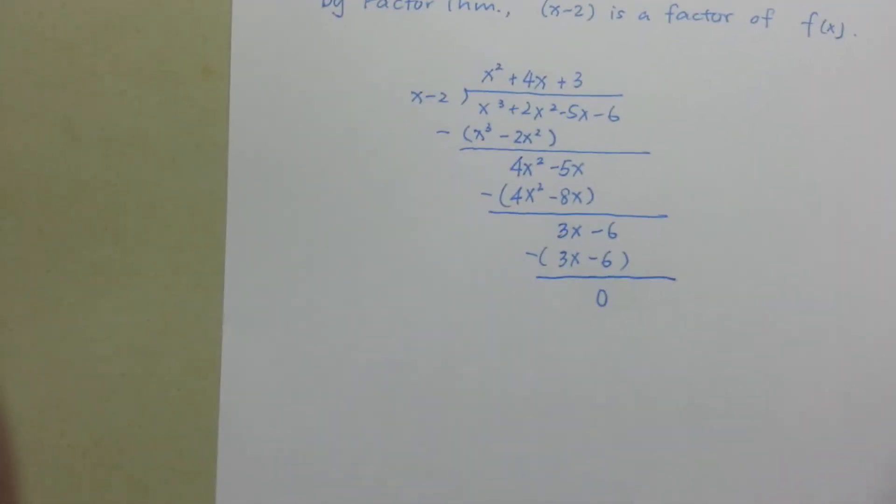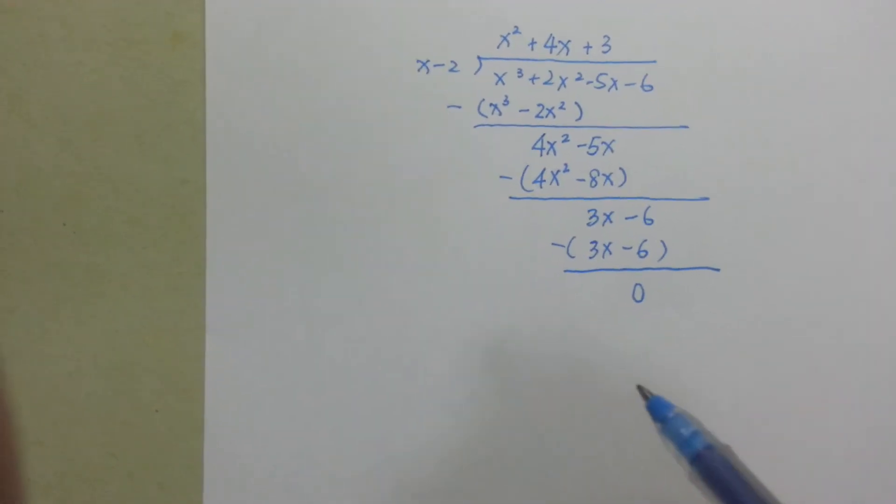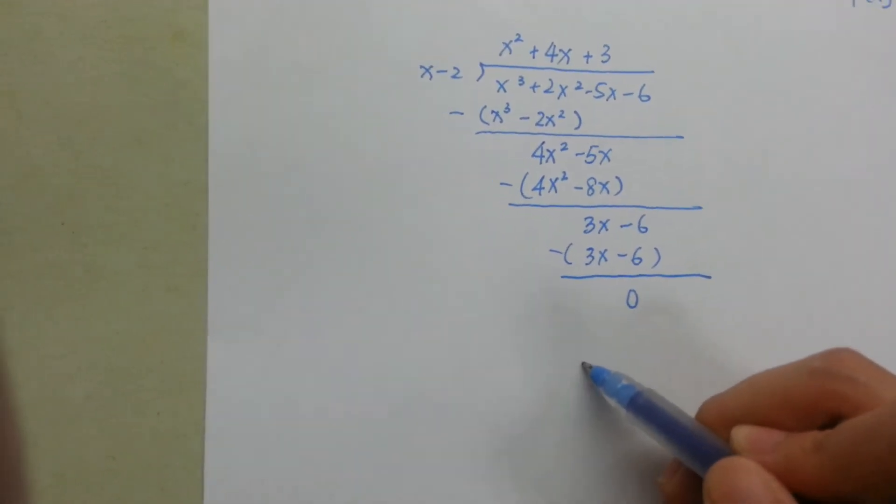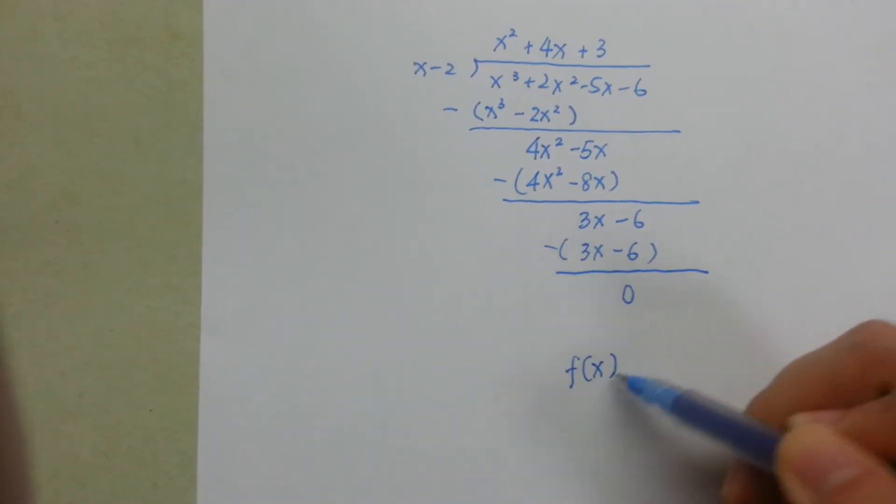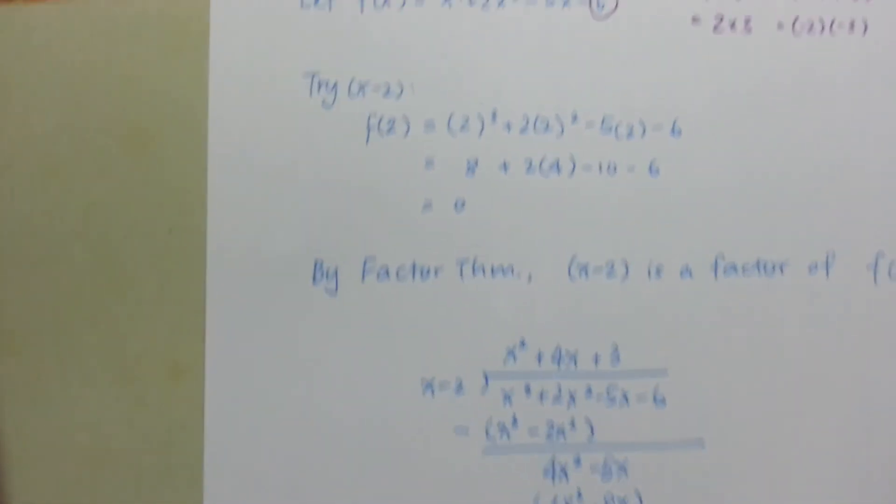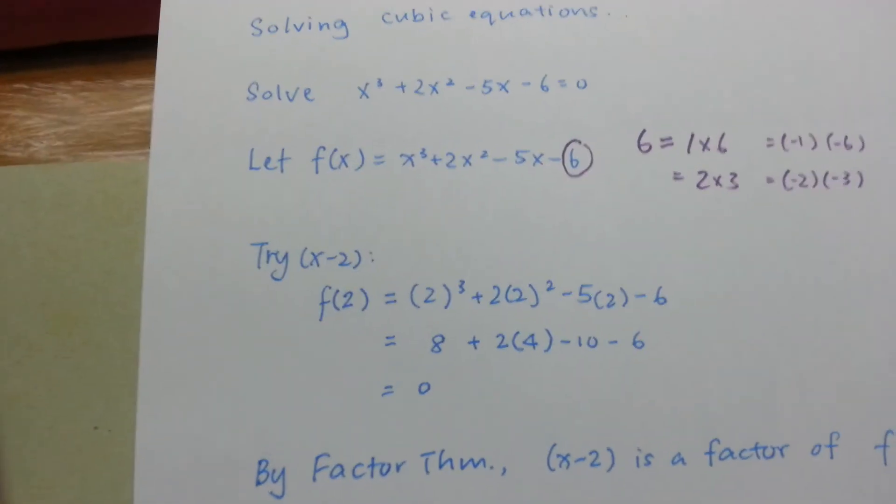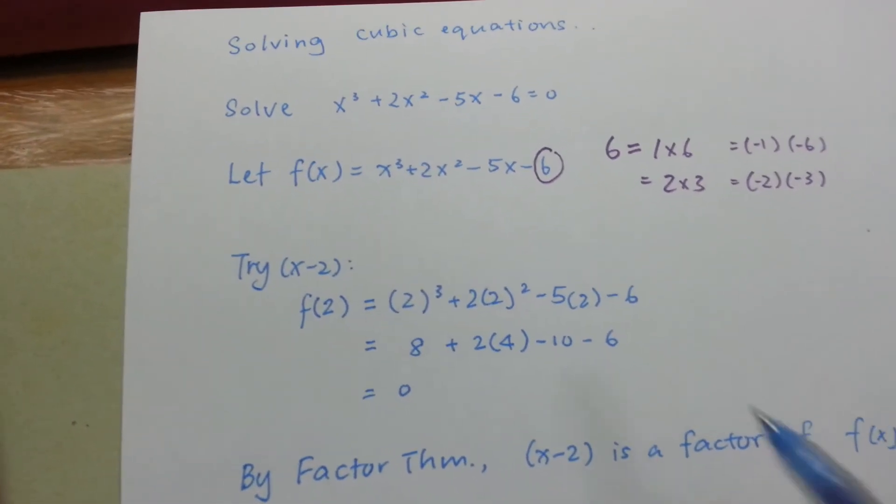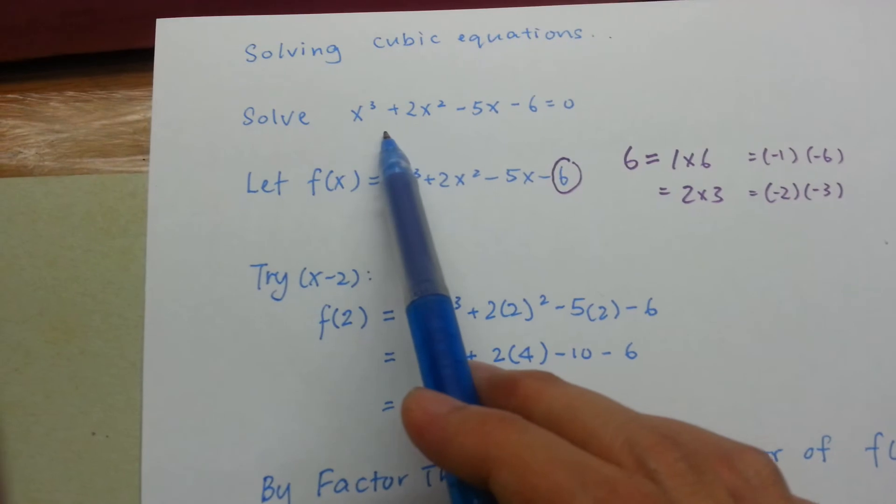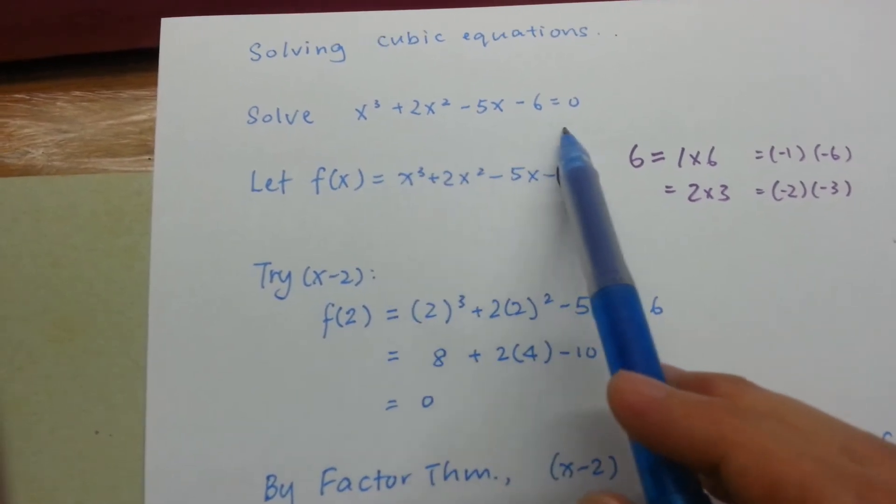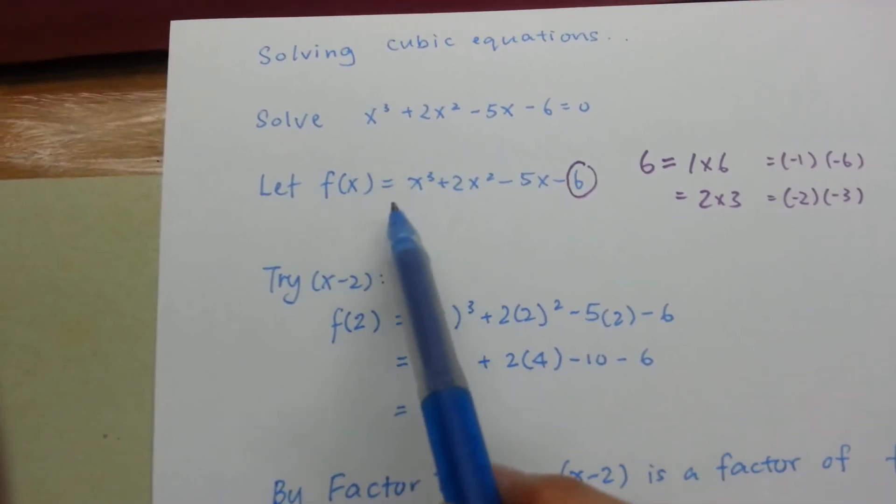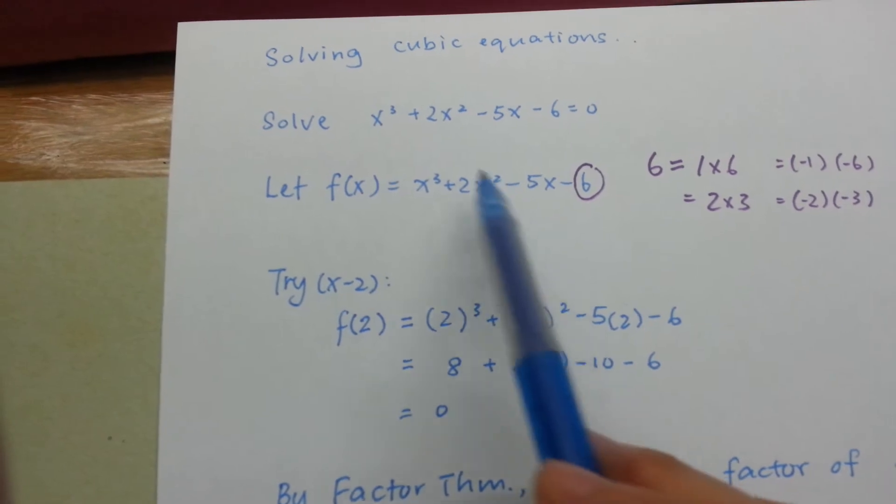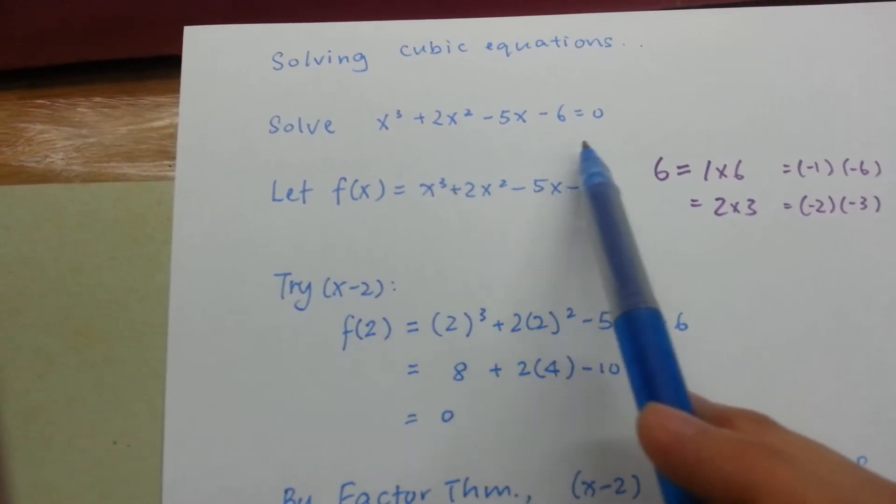Now we have this long division. You can proceed. So the question wants us to solve f(x) = 0. Let's remind you, the question says solve this, and the left-hand side we have let it to be f(x). So now solve f(x) = 0.